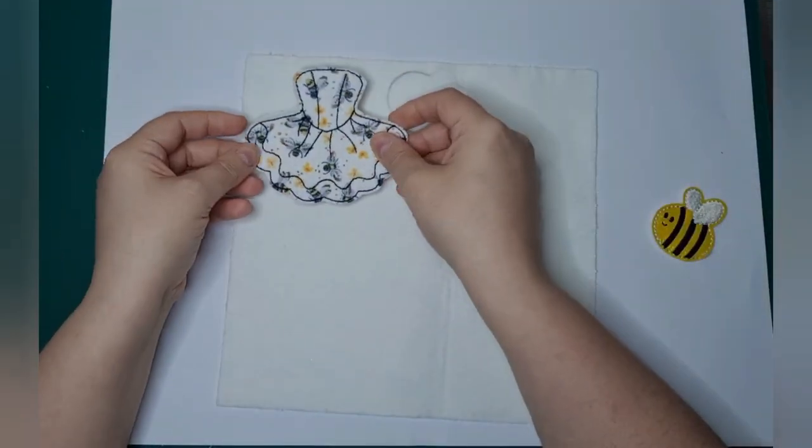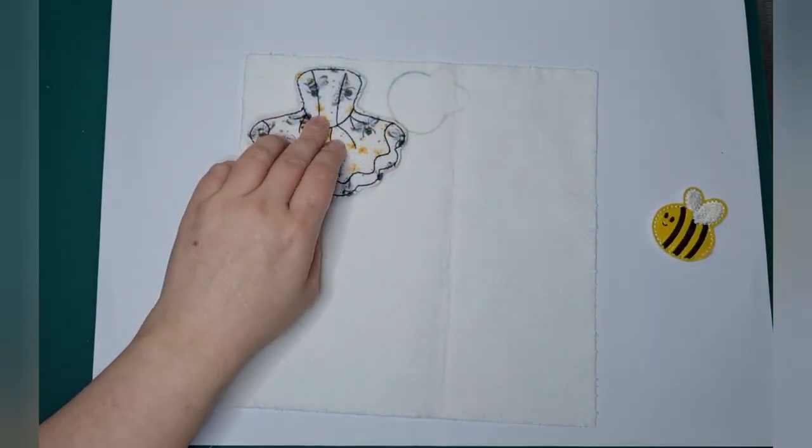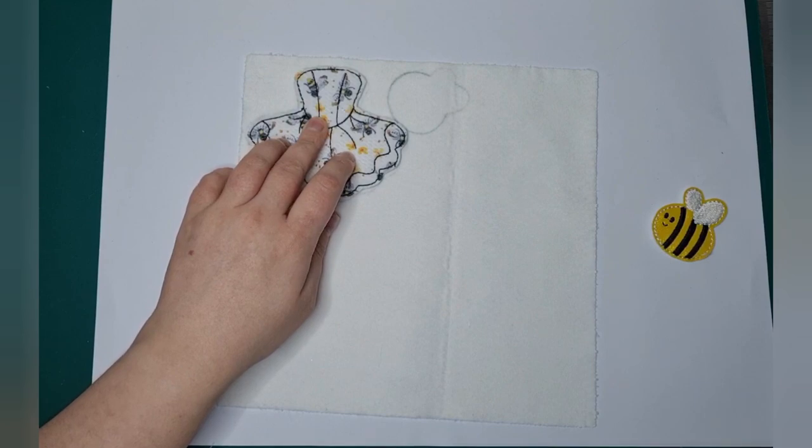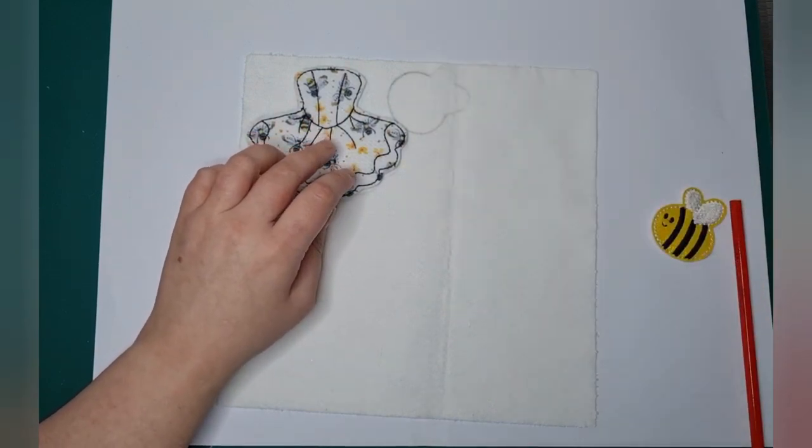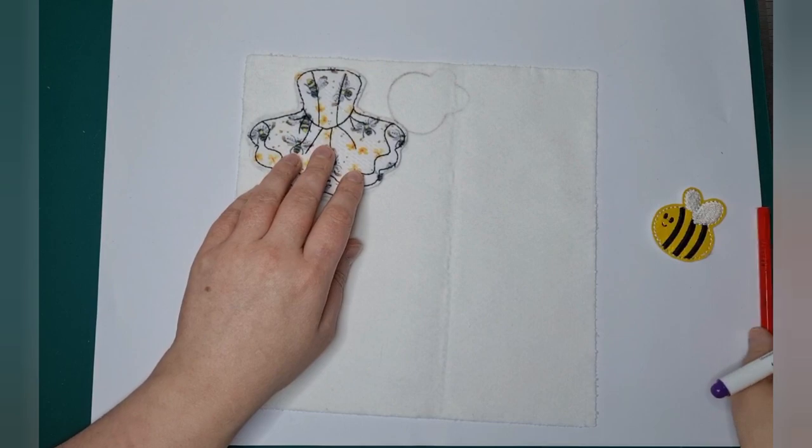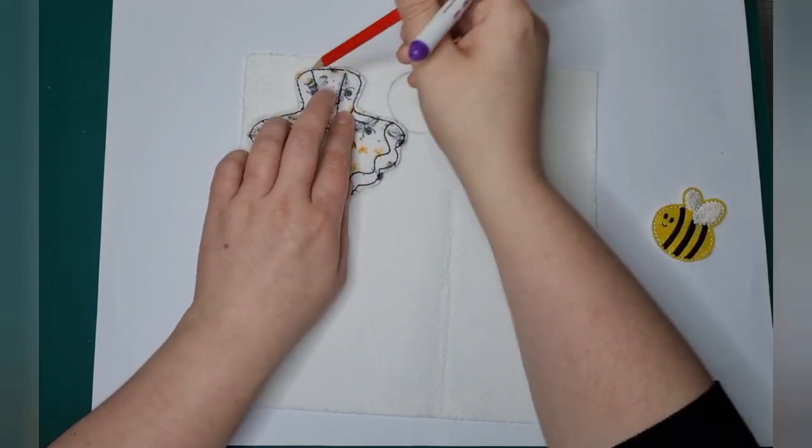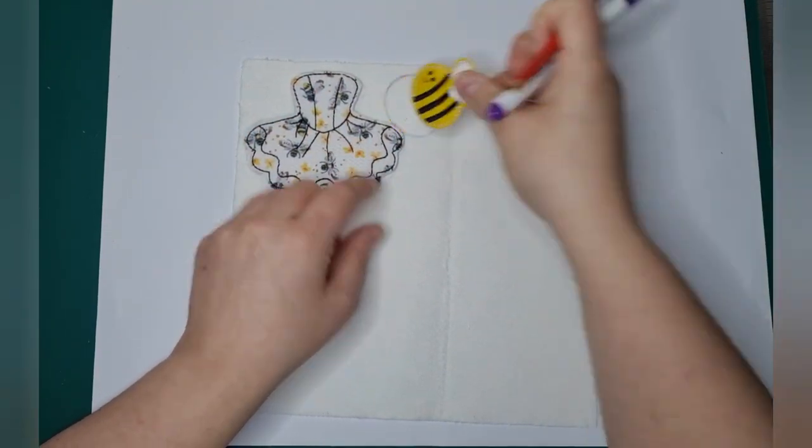What I've done is on the felt I have taken a pencil or you could get a fadeable marker. I do have one but it's white so I don't want to risk it so I've just done pencil and I've just drawn around both pieces.